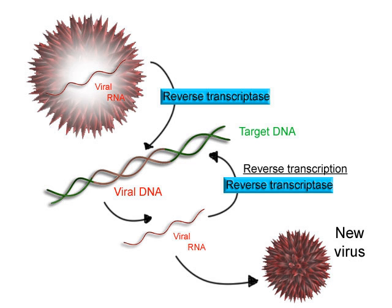A molecule that allows the genetic material to be realized as a protein was first hypothesized by François Jacob and Jacques Monod. Severo Ochoa won a Nobel Prize in Physiology or Medicine in 1959 for developing a process for synthesizing RNA in vitro with polynucleotide phosphorylase, which was useful for cracking the genetic code. RNA synthesis by RNA polymerase was established in vitro by several laboratories by 1965; however, the RNA synthesized suggested the existence of an additional factor needed to terminate transcription correctly. In 1972, Walter Fiers became the first person to prove the existence of the terminating enzyme. Roger D. Kornberg won the 2006 Nobel Prize in Chemistry for his studies of the molecular basis of eukaryotic transcription.